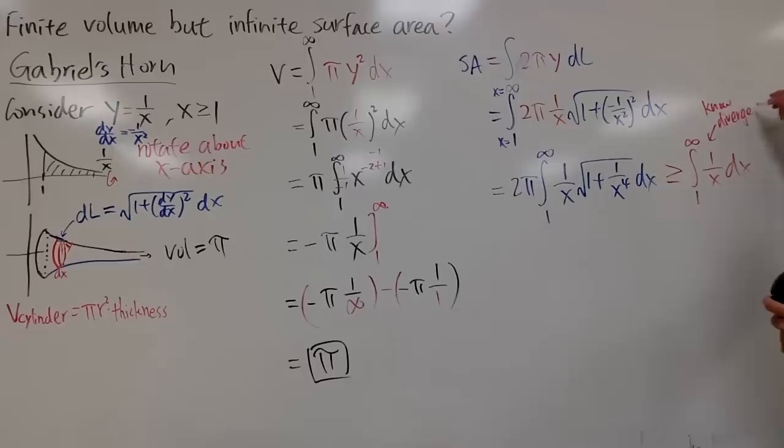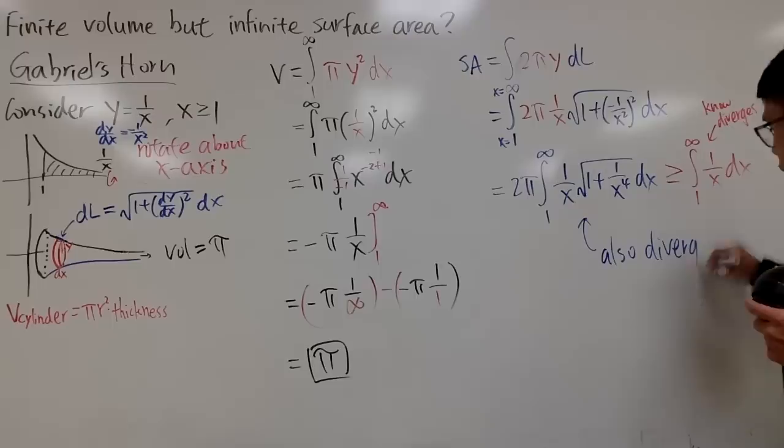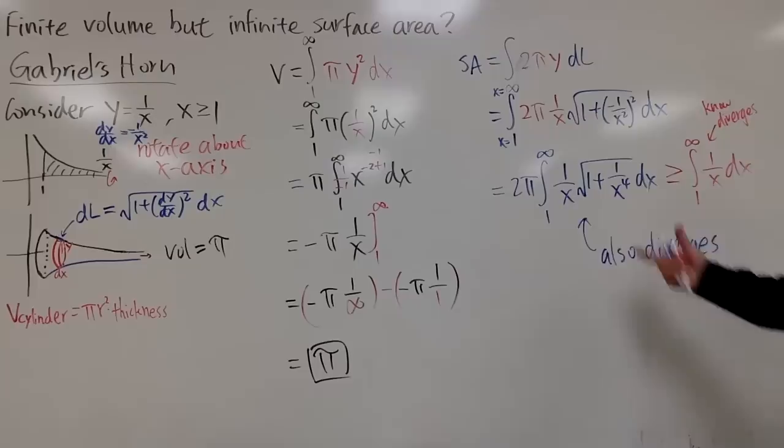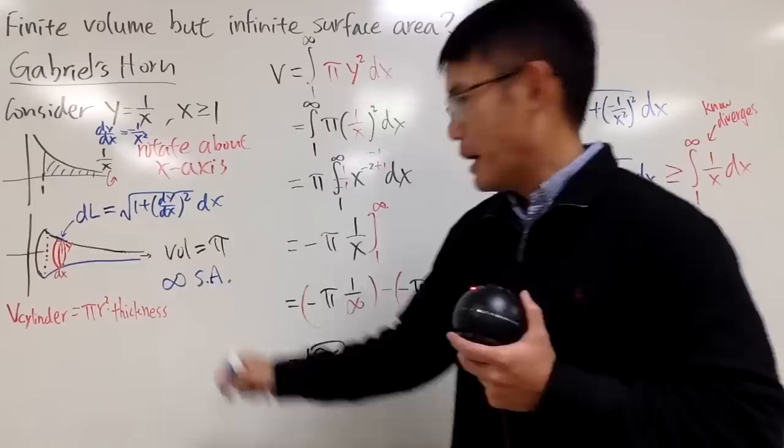But this right here, we know it diverges to infinity. Therefore, we can conclude that this must also diverge to infinity. So what we're saying, this is positive infinity, this is even bigger, therefore this has infinite surface area for Gabriel's horn. You see, this is the crazy part. How can you even imagine that?